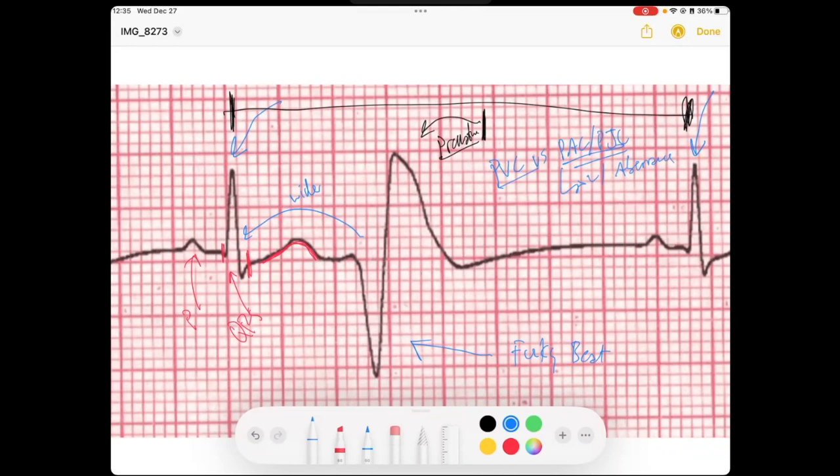So how do I determine the difference? Well, I look in front of this QRS. So I look here. So I see no P's.